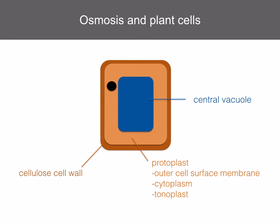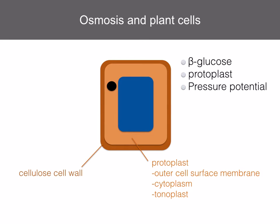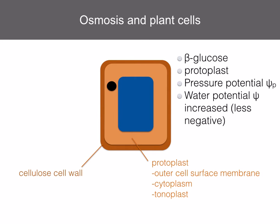Plant cells contain solutes dissolved in the central vacuole. When placed in pure water, they absorb water by osmosis. Why don't plant cells burst? Because they have a cellulose cell wall, whose arrangement of beta-glucose molecules gives it strength. As water enters the cell, it causes the protoplast to swell and push against the cell wall. Because the cell wall allows only limited expansion, a pressure builds up that resists further entry of water — we call this the pressure potential. This increases the water potential in the cell, making it less negative. The protoplast remains pushed against the cell wall, and the cell is said to be turgid.